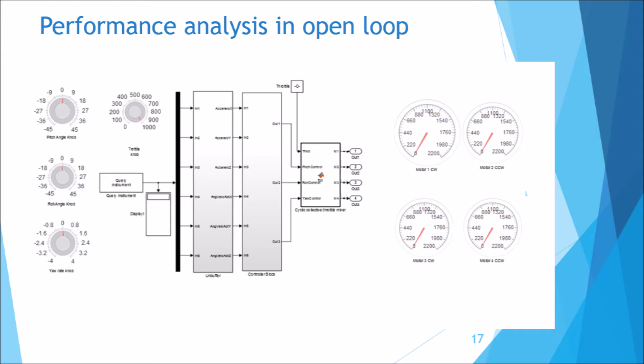This unbuffered data is fed to the control block which generates the control signals. These control signals are mixed with the throttle values to generate the on time for four motors. The knobs are used to vary the reference pitch angle, roll angle, yaw rate, and the throttle value. The dials represent the on time for each motor by moving the MPU 6050 sensor in various angles.